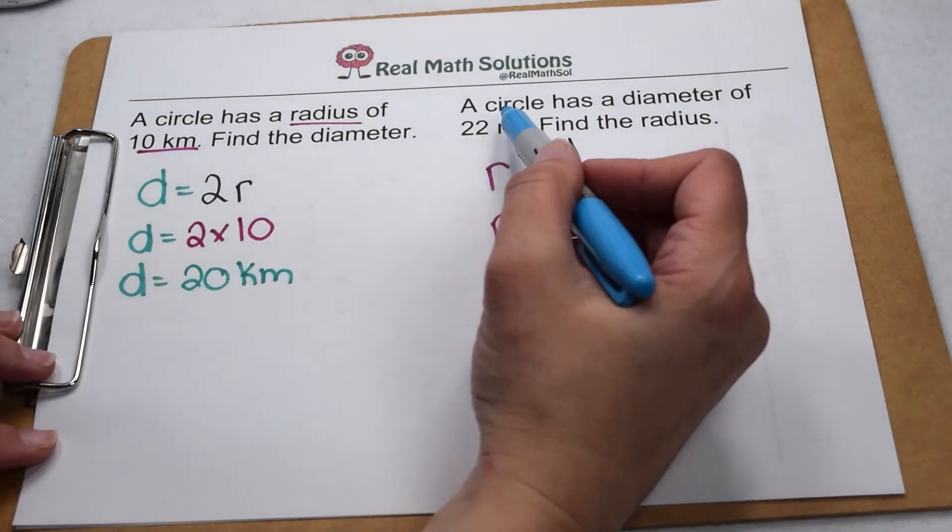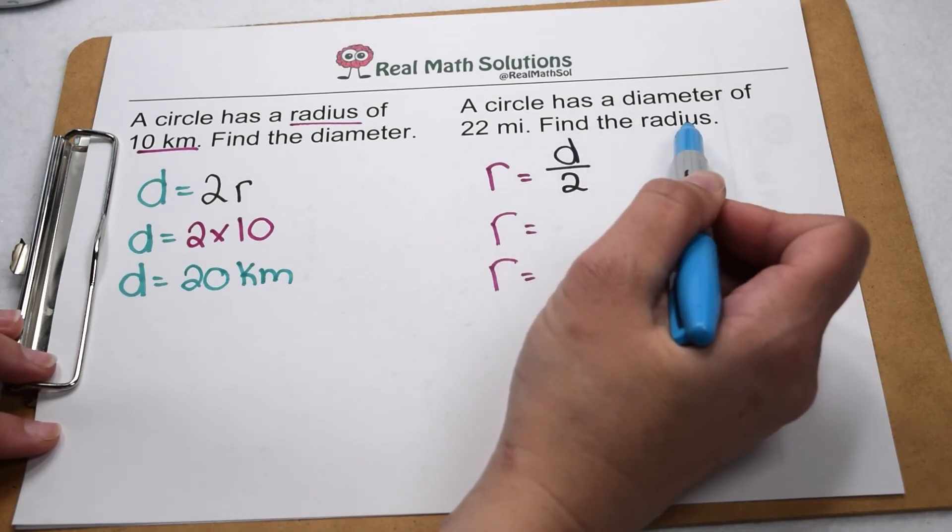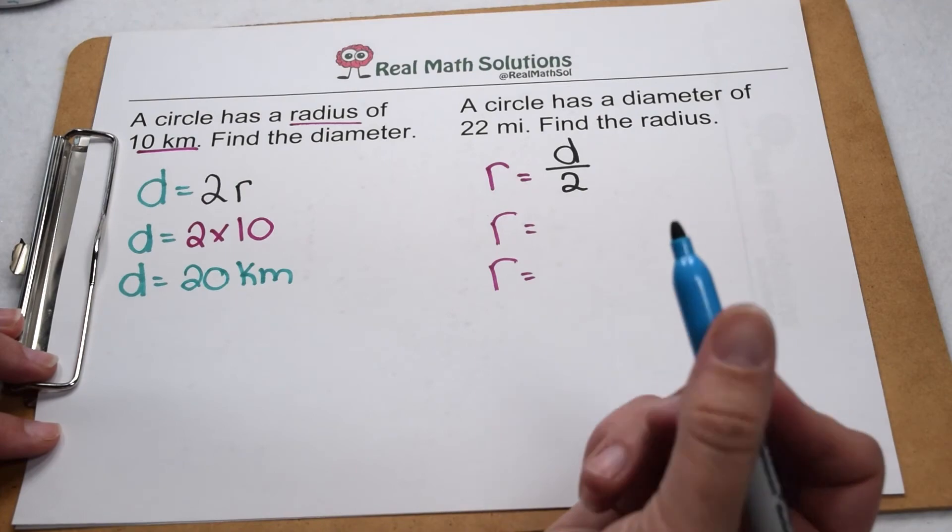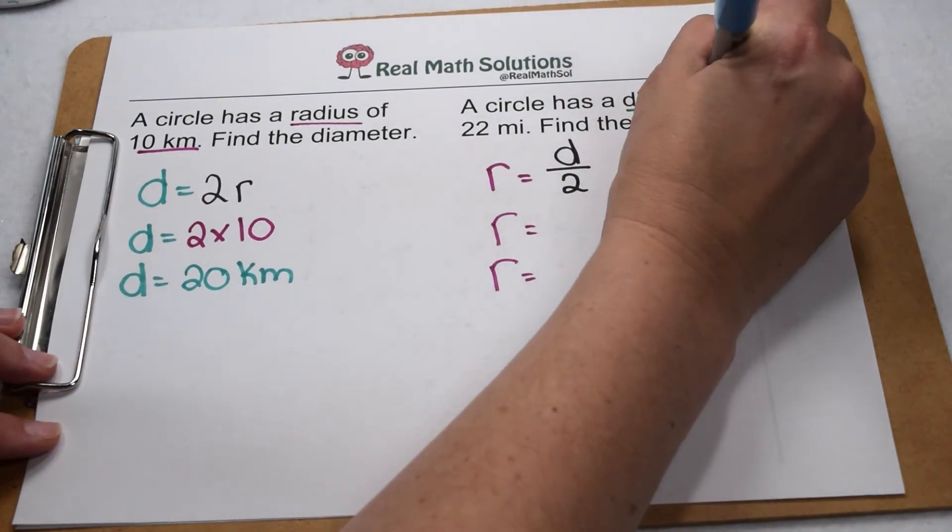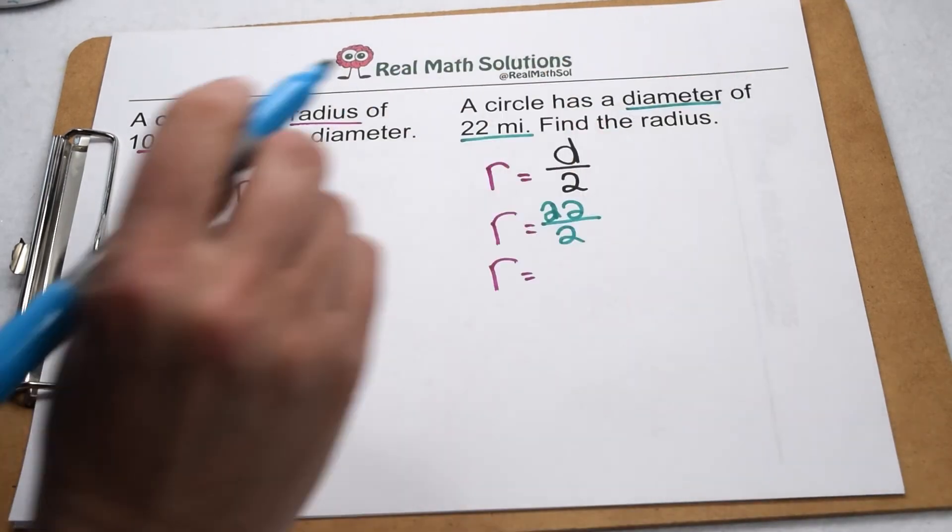Over here, it tells us a circle has a diameter of twenty-two miles. We need to find the radius. Well, we saw that a radius was worth half the diameter. So that means to find the radius of this circle, we need to take our diameter of twenty-two miles and divide it by two.